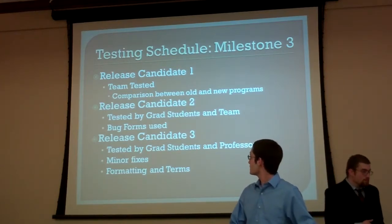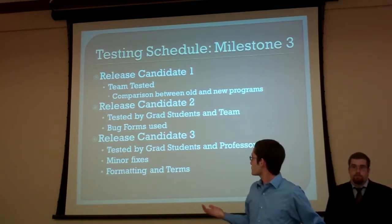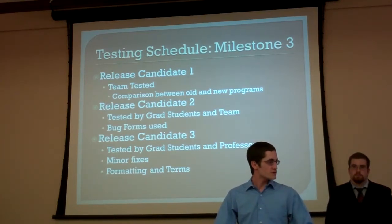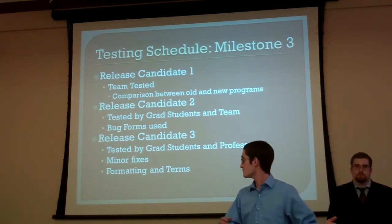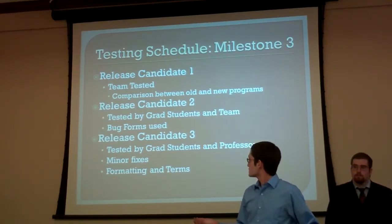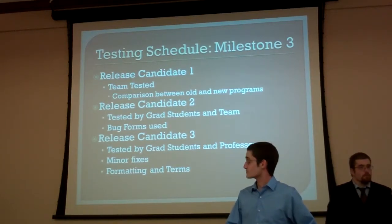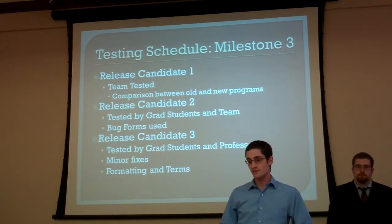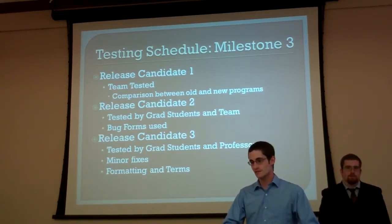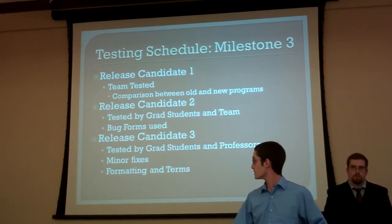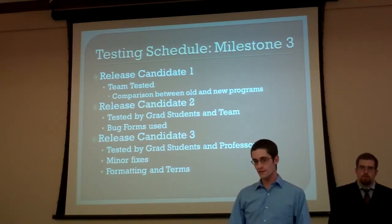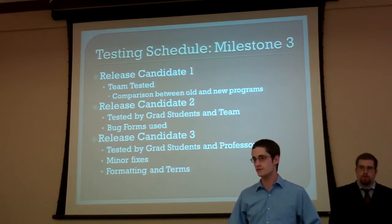For milestone three, about a month ago we began with release candidate one, used internally by our team. We went in every day for about a week, took our own samples, and compared them to previous Pascal code data to verify everything worked through an entire drive. From that, we made release candidate 3.2, which was used by grad students and the team. They filled out bug forms — though most of the time they just told us verbally what they wanted changed. Release candidate 3.3 is the final version they've been using for about two weeks now, used by grad students and professors alike.